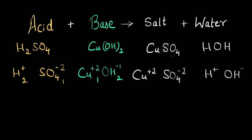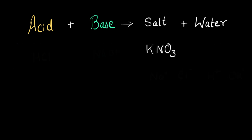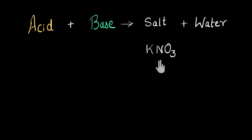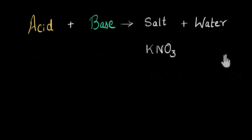Now let's do one last problem. This time I'm given the salt KNO₃, potassium nitrate, and we have to find which acid and base could react to give us this salt. I want you to pause the video and try this yourself first. If you have tried it, let's see. We know that ions of acids and bases exchange position to give salt and water, so exchanging the ions of salt and water will give us back the acid and base.